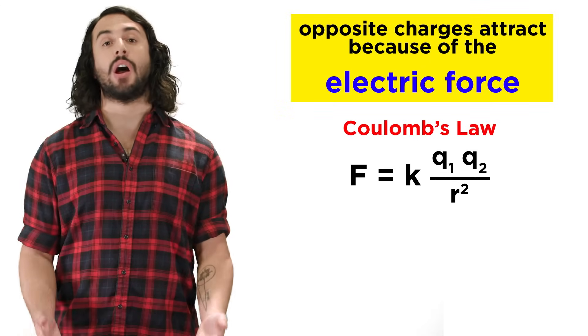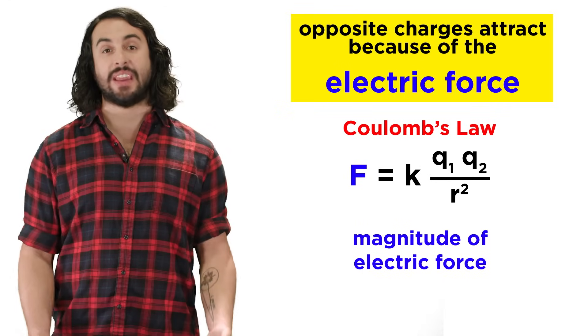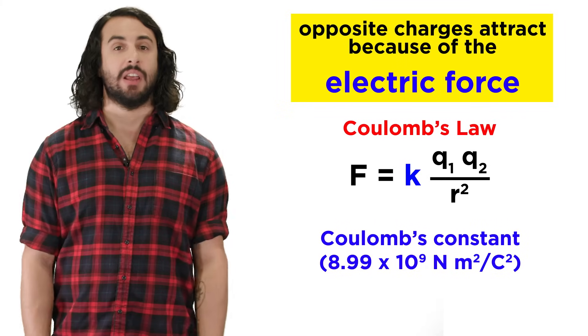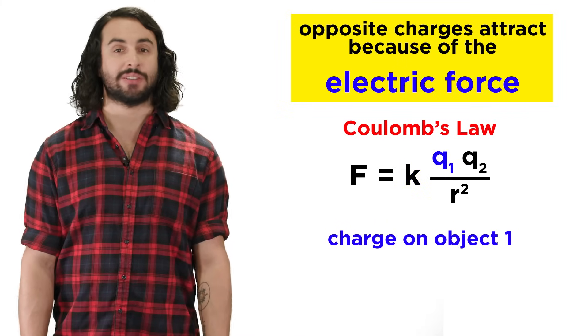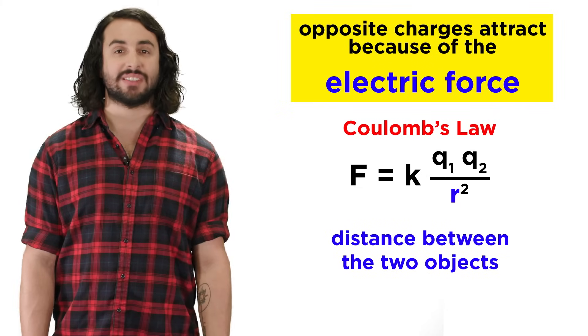This is outlined in Coulomb's law, which states that the magnitude of the electric force between two objects is equal to the Coulomb constant times the charge on one object, times the charge on the other, divided by the square of the distance between them.